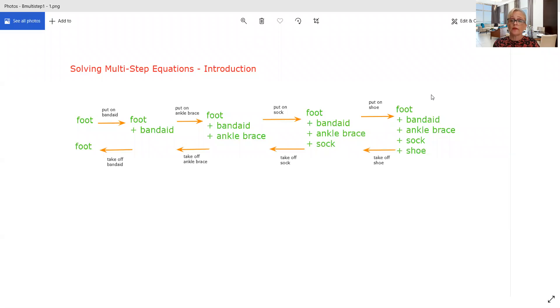We also learned that multiplication and division are inverse operations. So to undo multiplying by 2, you're going to divide both sides by 2. To undo dividing by 3, you're going to multiply both sides by 3. Now that's fine if you've just got one operation to do, but what happens if more things have been done?